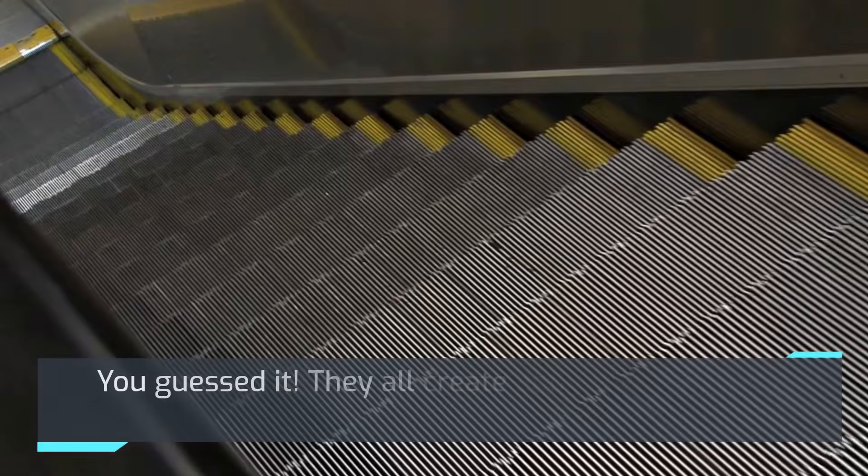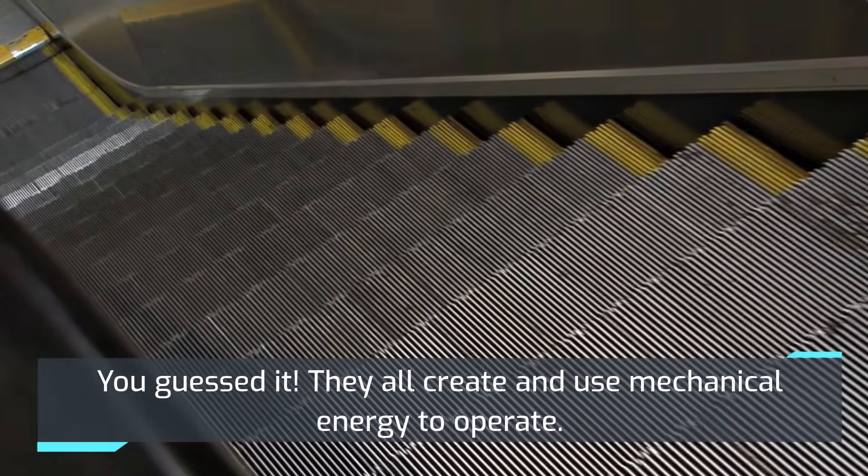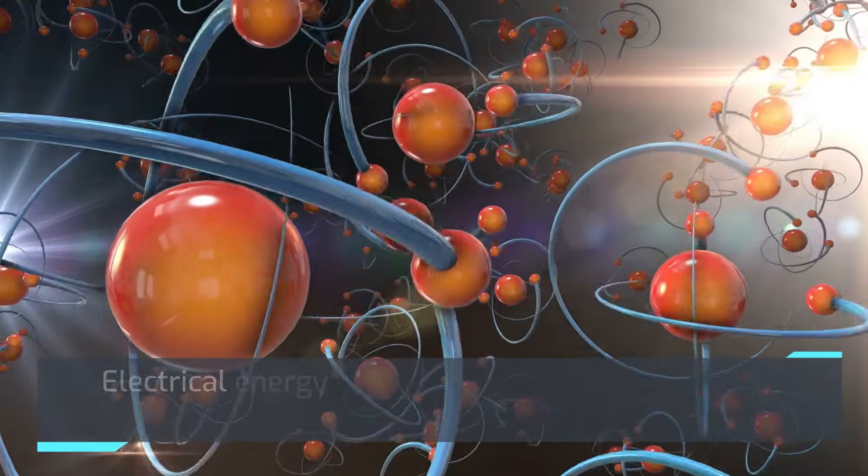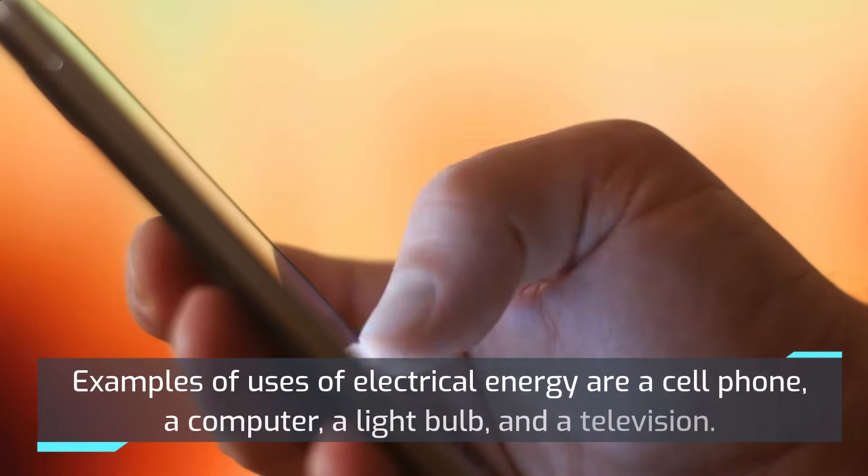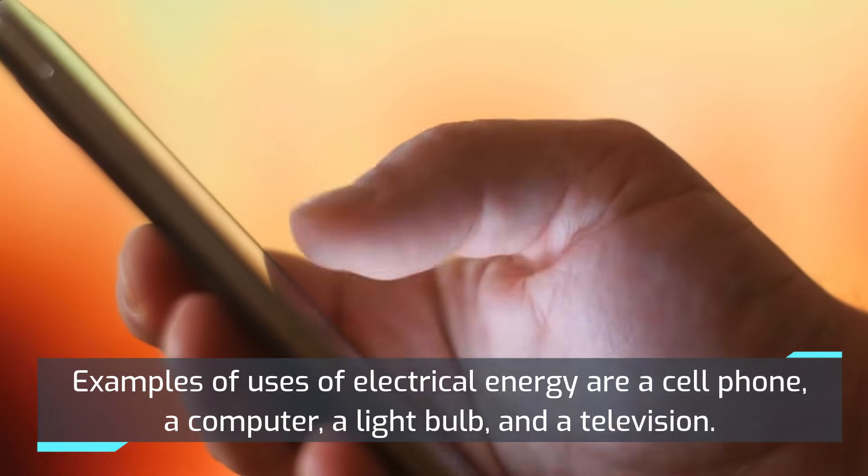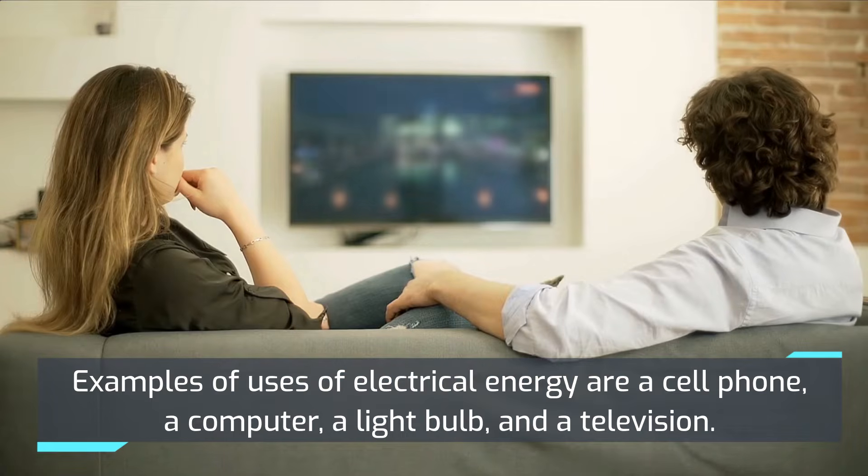You guessed it, they all create and use mechanical energy to operate. Electrical energy results from the flow of charged particles. Examples of uses of electrical energy are a cell phone, a computer, a light bulb, and a television. All of these use electrical energy to operate.